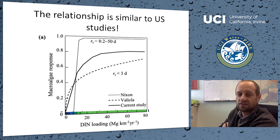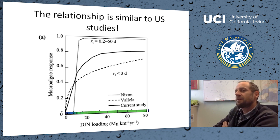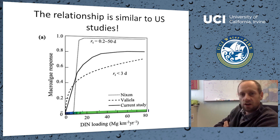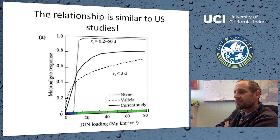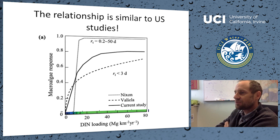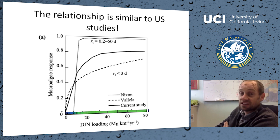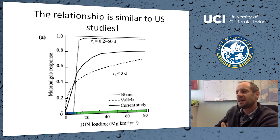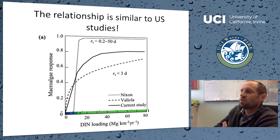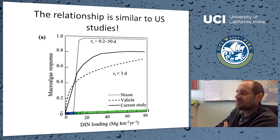We then looked at this ratio of macroalgae to total vegetation as a function of nitrogen loading. The x-axis is DIN loading — dissolved inorganic nitrogen, effectively nitrate loading, in tons per km² per year. What we very clearly see is that as nitrogen loading increases, there is a very rapid threshold at around 5–10 tons of nitrate per year where the system flips from being dominated by seagrass to being dominated by macroalgae.